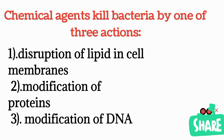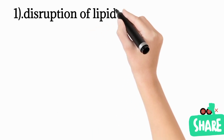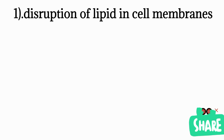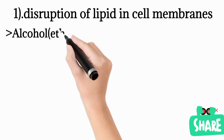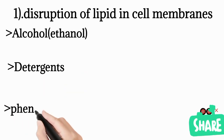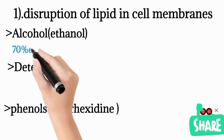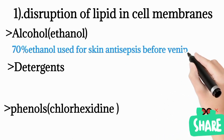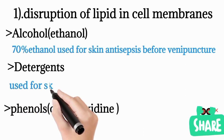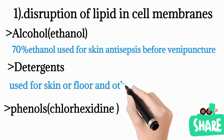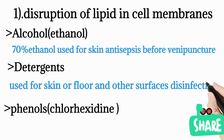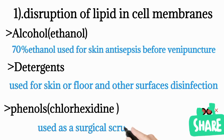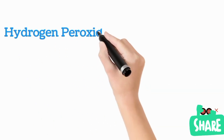Disruption of lipids in the cell membrane can be caused by alcohols such as ethanol, detergents, and phenols — a common example being chlorhexidine. Seventy percent ethanol is used for skin antisepsis before venipuncture; detergents are used for skin and floor surface disinfection; and chlorhexidine is commonly used as a surgical scrub before operations.